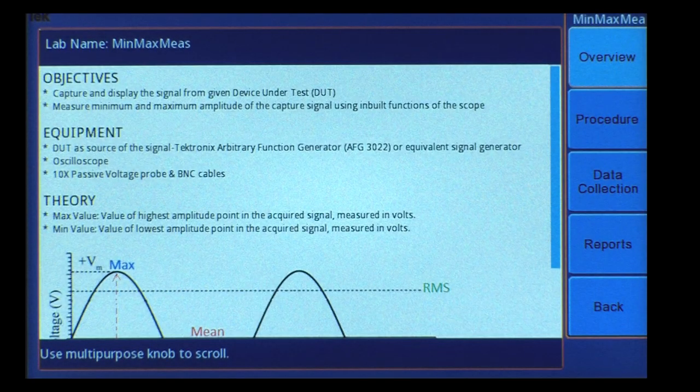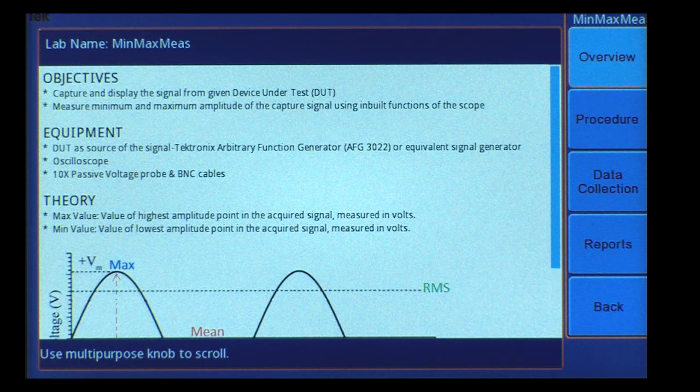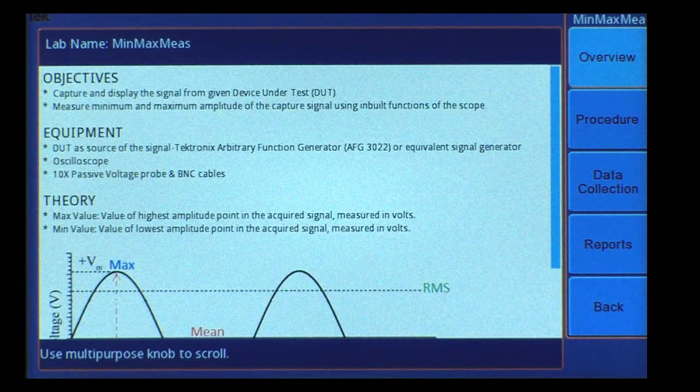Once a lab is selected, the menu on the right shows the options for reviewing and performing the lab. You choose an option by pressing the corresponding side bezel button, and you scroll through the information using the multi-purpose knob.